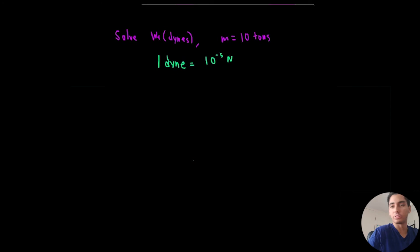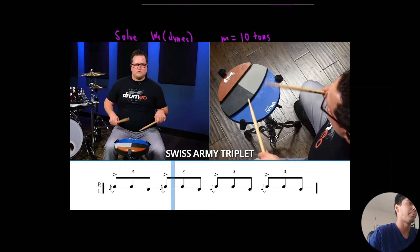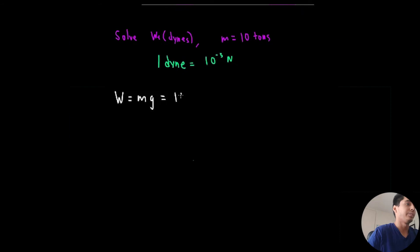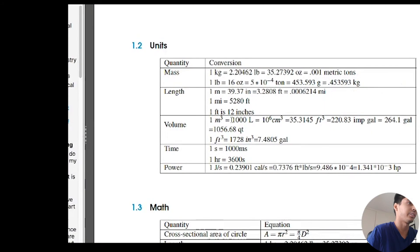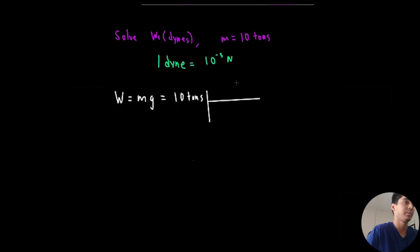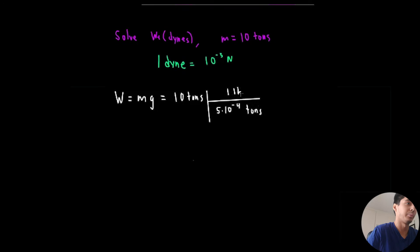I think you get it by now. If F equals MA, you've got to solve for W. Weight equals MG. The mass is 10 tons. So first we got to convert tons to like an American, so I'm pretty sure that's on the table. Five times 10 to the negative four tons is one pound mass. Great, so we got pound mass.